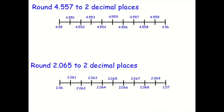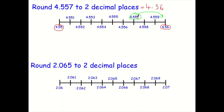Rounding to two decimal places — very similar. Round 4.557 to two decimal places. You want two things after the decimal point. Your two options are 4.55 or 4.56. Where is 4.557? It's here — clearly closer to 4.56. Why does it round to 4.56? Because the third decimal place is five or more, so let it soar — that five in the second decimal place becomes a six.